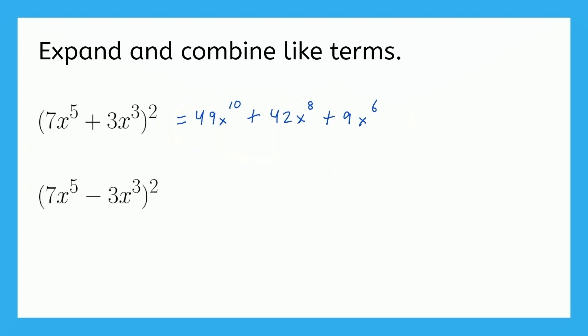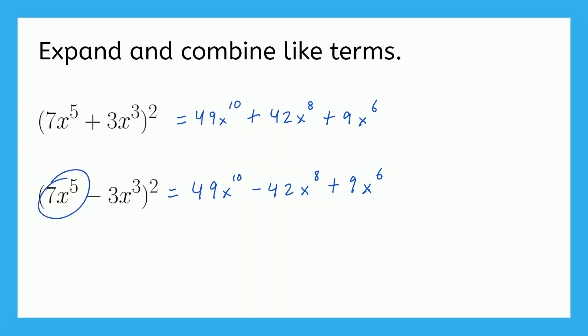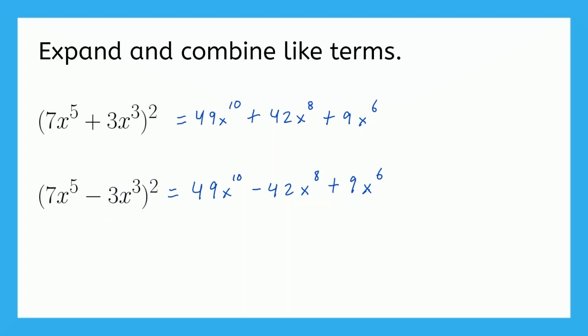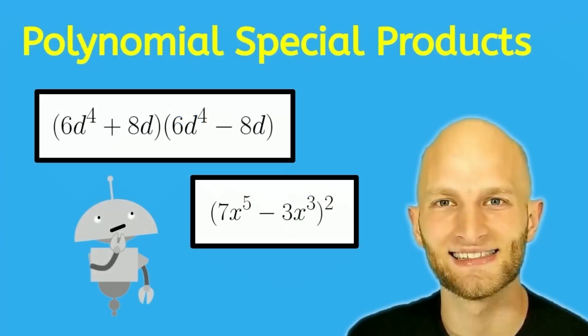This second one is the exact same — the only difference is the sign in the middle. So we get 49x to the tenth, then minus 42x to the eighth — we don't want to forget this minus because that makes a huge difference — and lastly, three squared is nine and x cubed squared is x to the sixth, so plus 9x to the sixth. And with that, we are finished with a video on polynomial special products. See you next time.